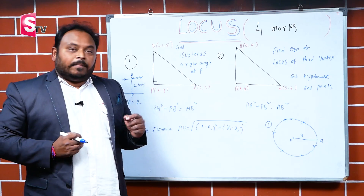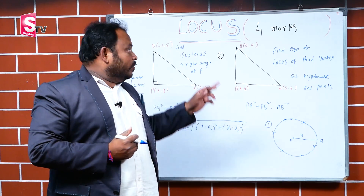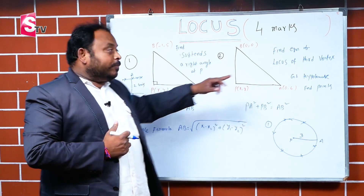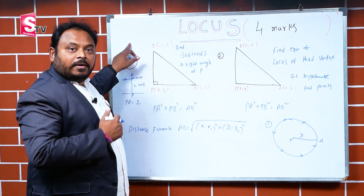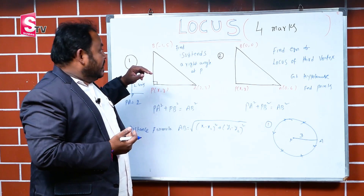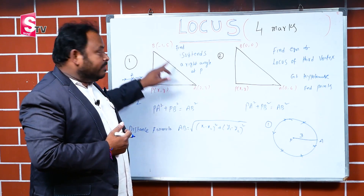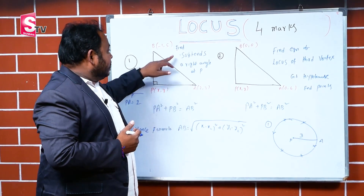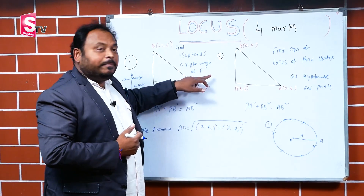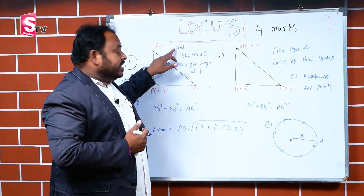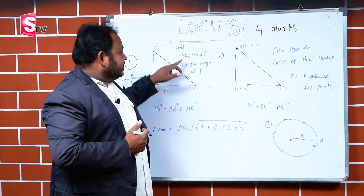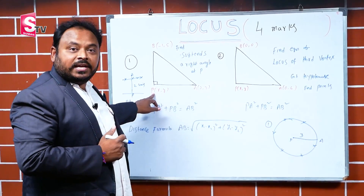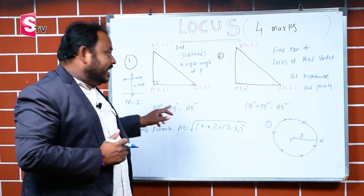I am going to explain two problems here. First problem: find the equation of locus of P(x, y), where the given points are A and B. Those two points joining from A to B subtend a right angle at P. Find the equation of locus of P — that means P is the point at the right angle. Those two points are (2, 3) and (-1, 5).